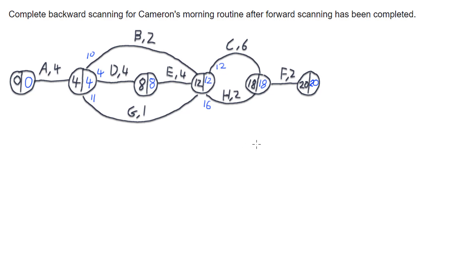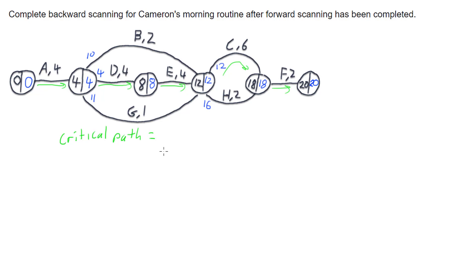From this we can identify our critical path. The critical path is a path through the network that follows the nodes that have equal values in them, but also follows the arcs that cause that — the longest activities. My critical path comes through A, then D (that's how I get to that node), then E (because that path took a total of 8 minutes, definitely longer than 2 and 1), then C (which was 6 long compared to 2), and then F. So my critical path is A to D to E to C to F.